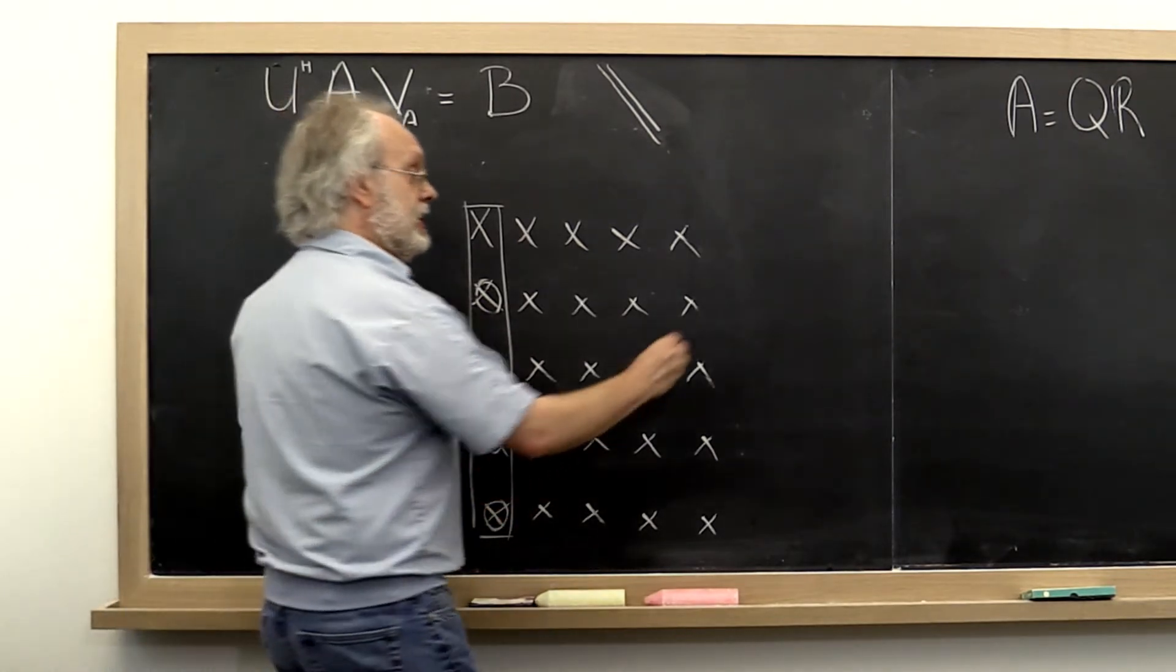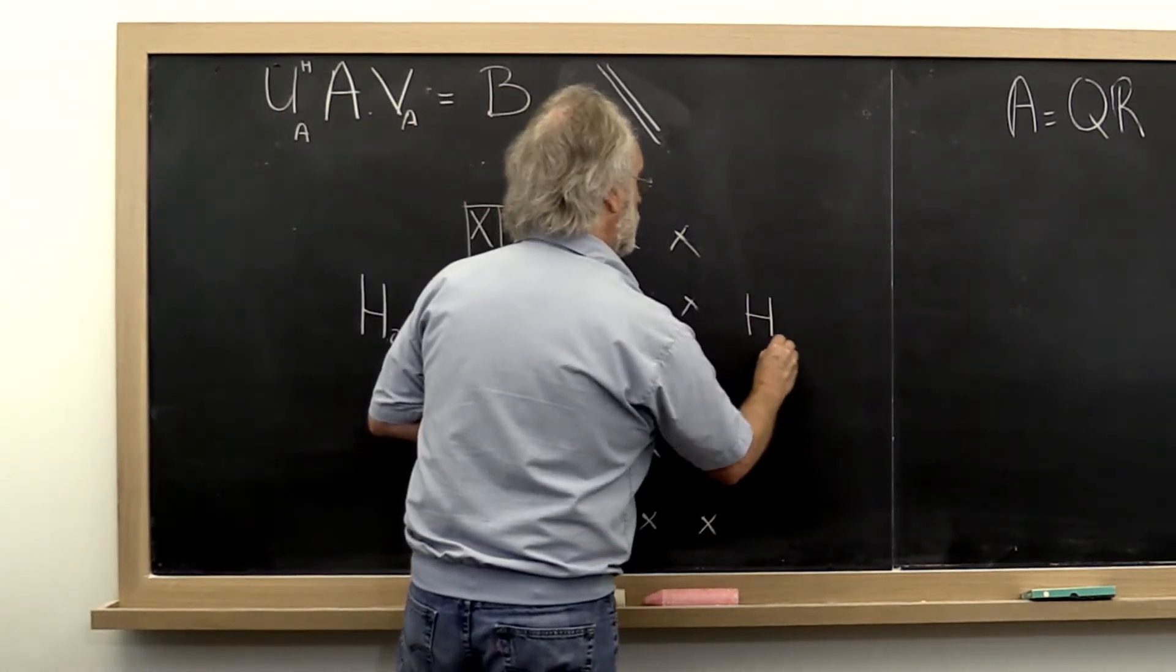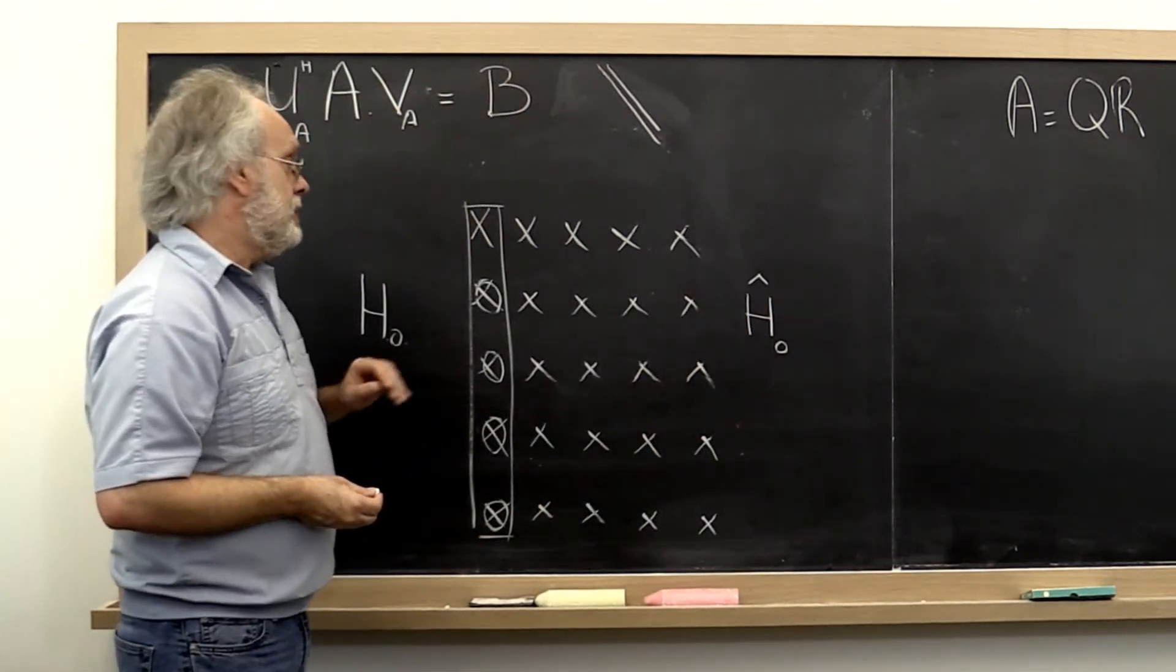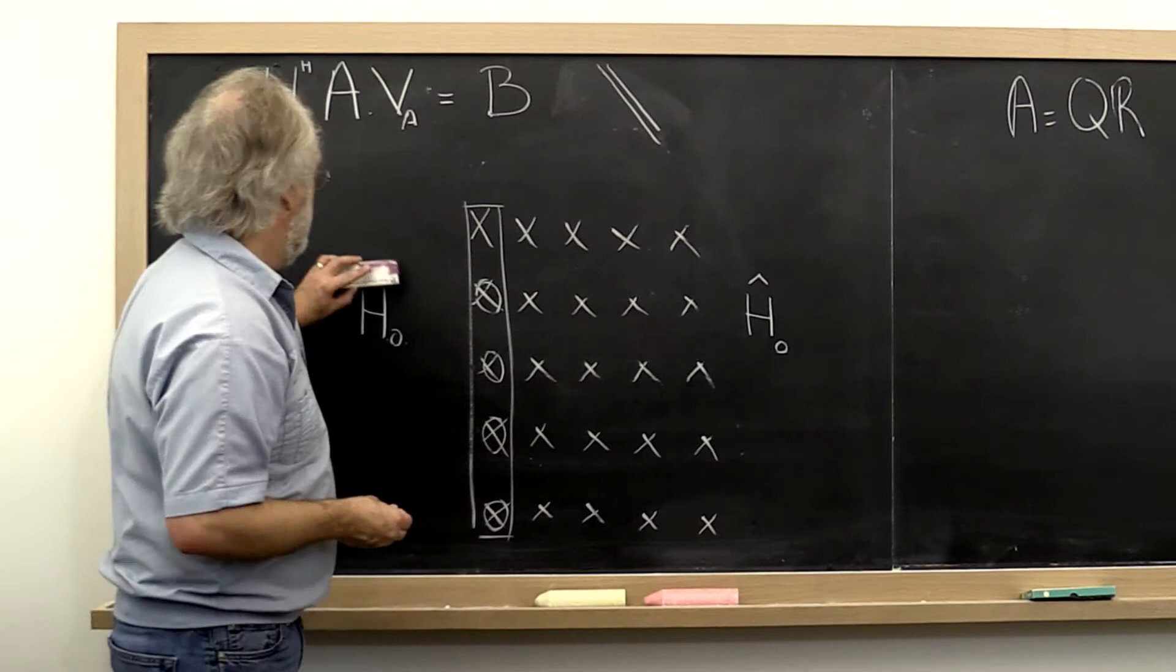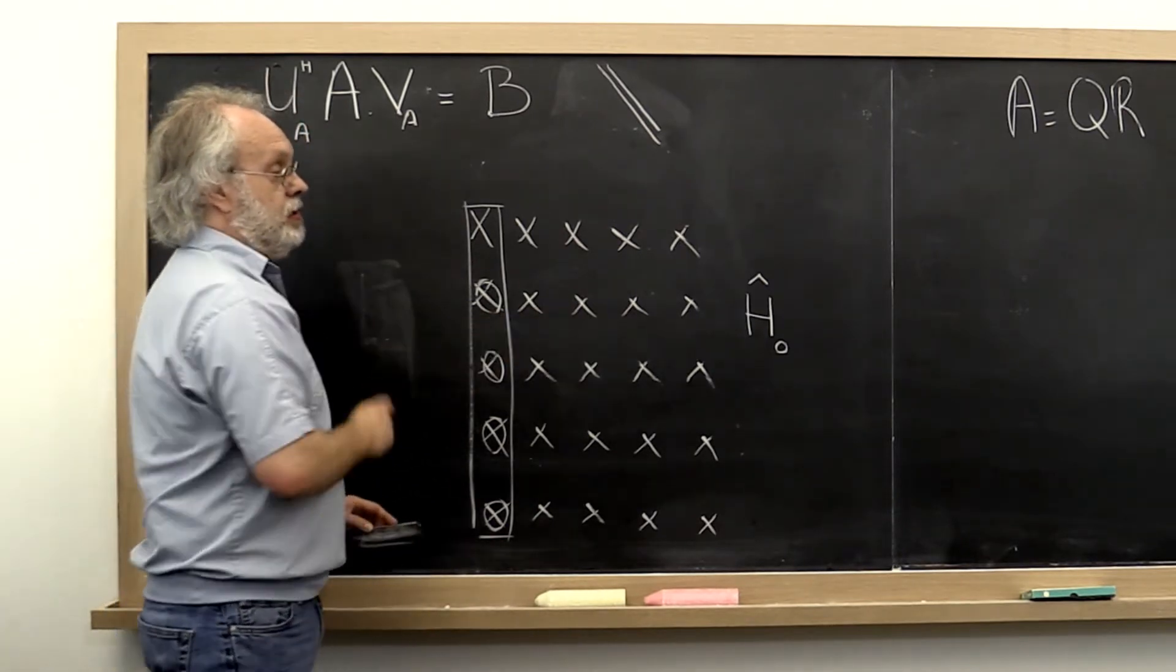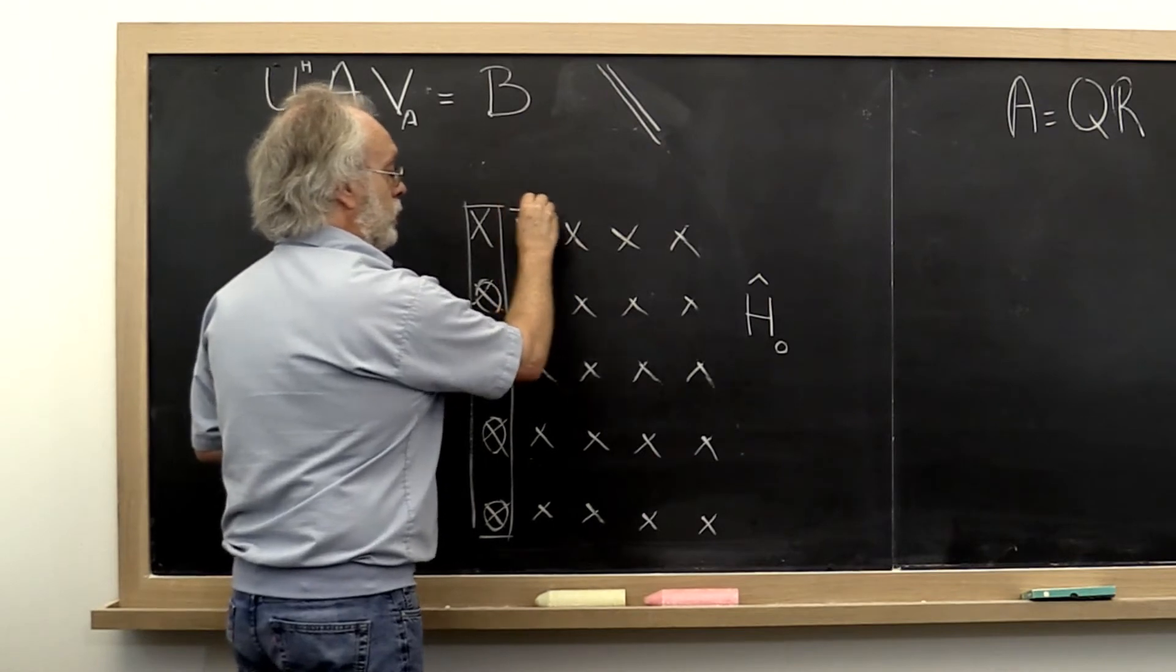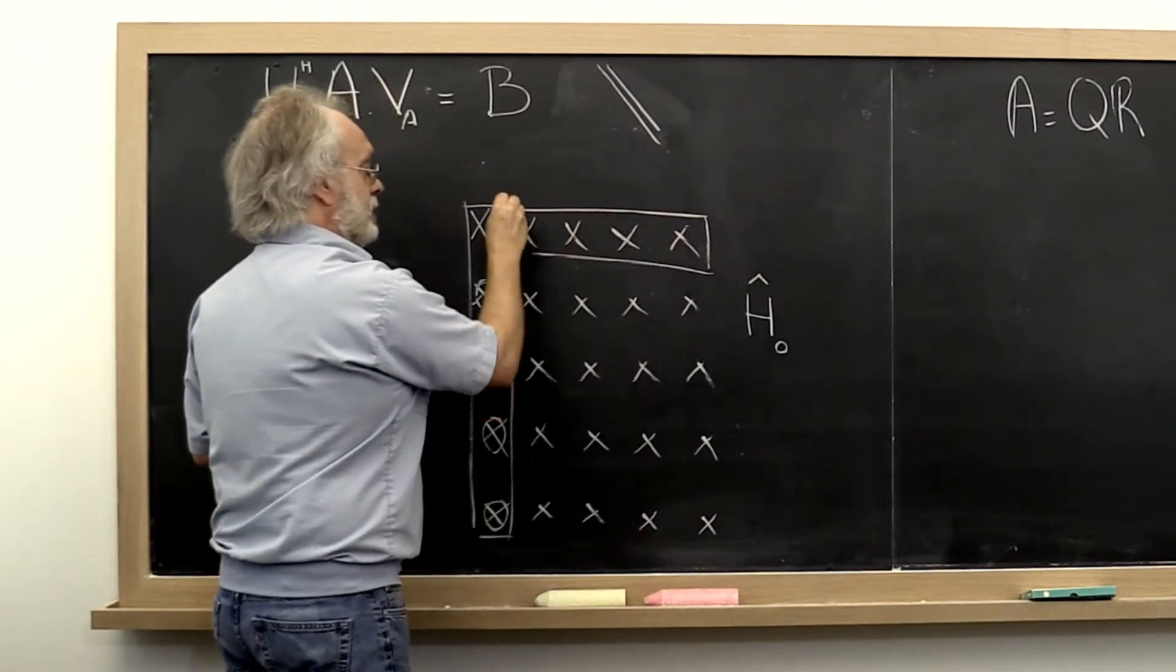So what if instead we compute a different Householder transform? Let's call it H0 hat. In such a way that this matrix that resulted has zeros right here. So what we do is we look at this vector right here.